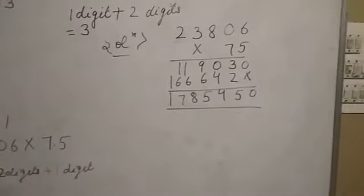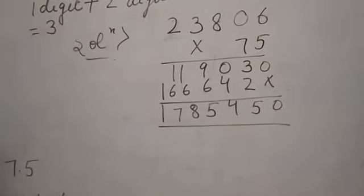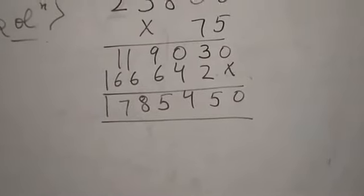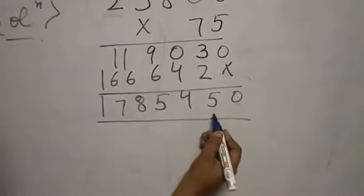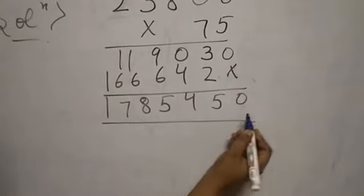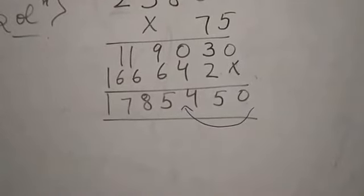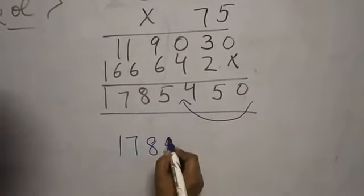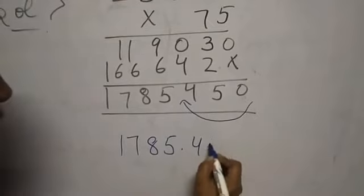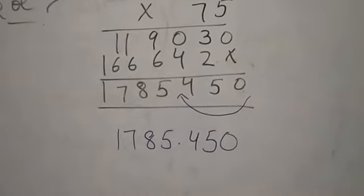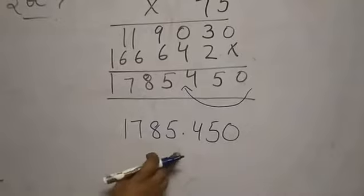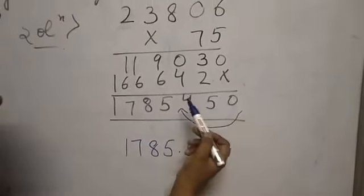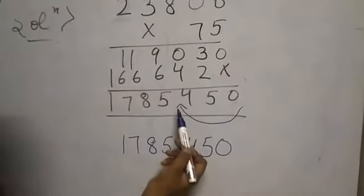So in your solution, count three digits from the right-hand side: one, two, three. Place the decimal there. Your result is 1785.450.